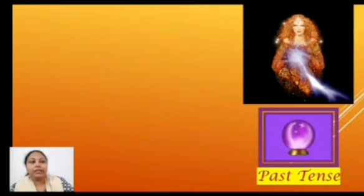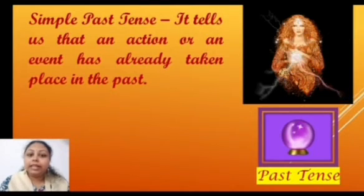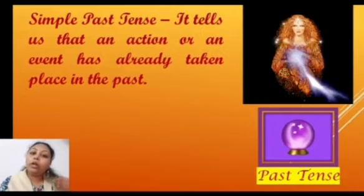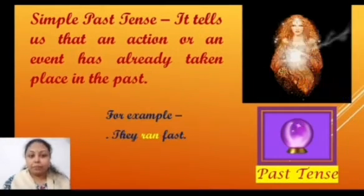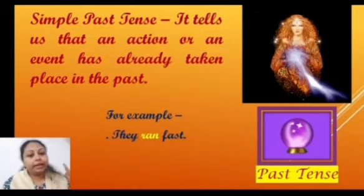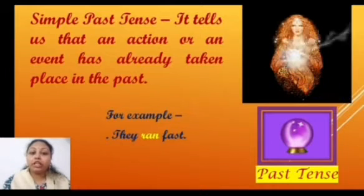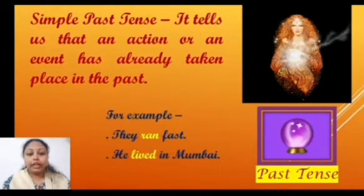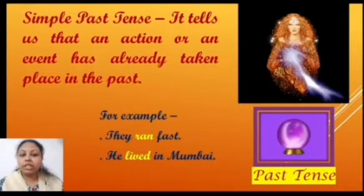Here comes Ginger — she is going to tell us today about simple past tense. Past tense tells us that an action or an event has already taken place in the past. For example, 'They ran fast' — here the verb has changed into its past tense: ran. Let us see the second example: 'He lived in Mumbai' — the verb has changed its form into the past tense, that is 'lived'.